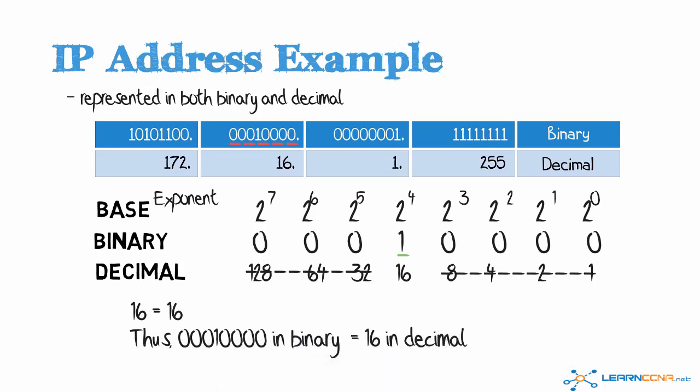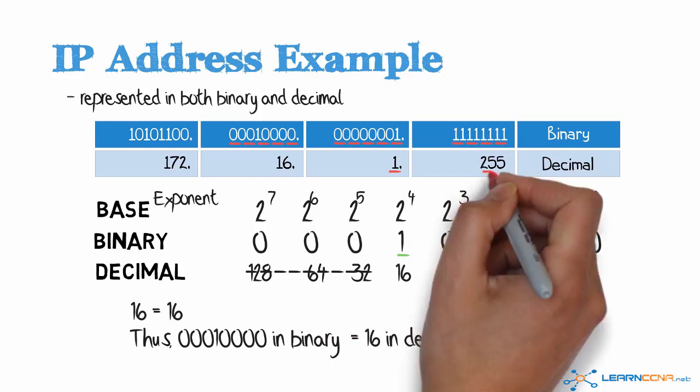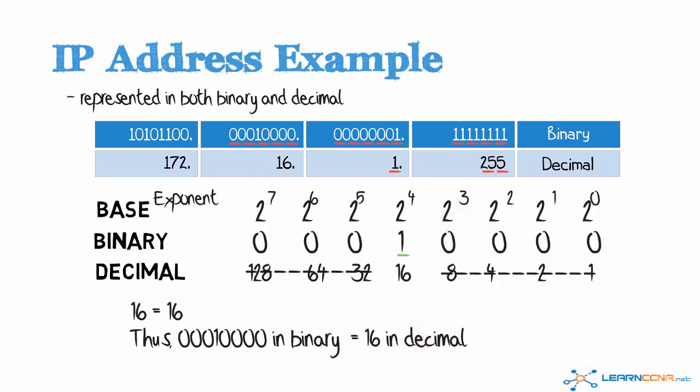By the same token, in the third octet, which is full of zeros except for the last bit, that equates to 1 in decimal. Or if we populate the octet with binary ones, that's the equivalent of 255. So that's another example of doing binary to decimal conversion.